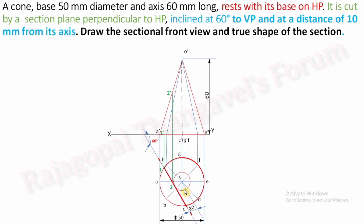The section plane is also cutting generator OB. Make this cutting point 3. In the front view, locate O dash and B dash. Extend a vertical projector until it touches the O dash–B dash generator and mark it as 3 dash.